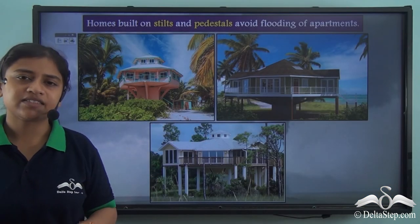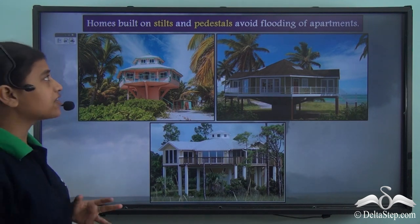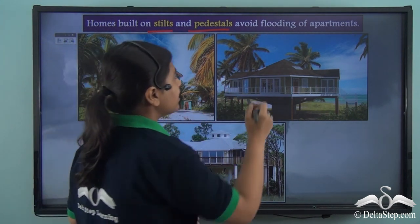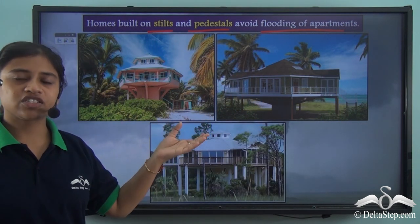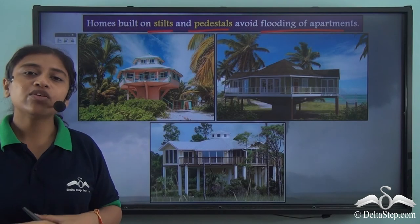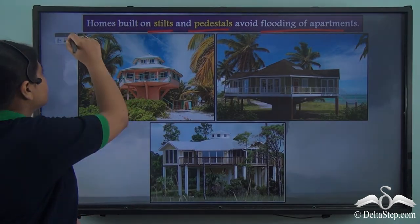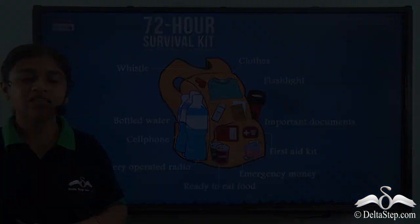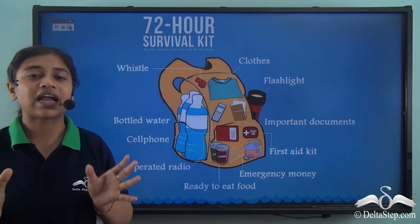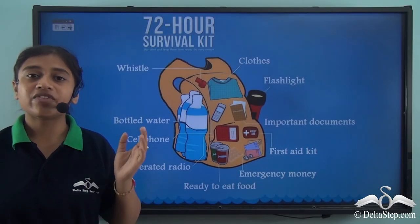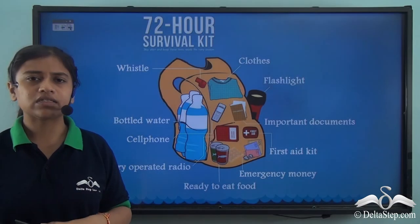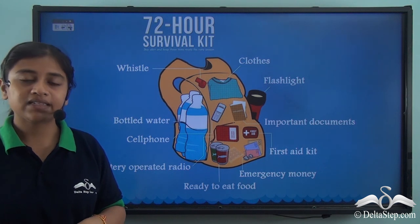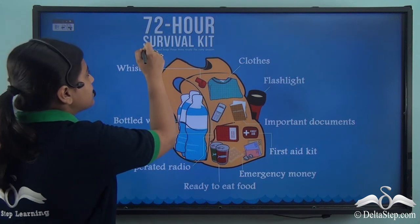In coastal regions, homes are generally built on stilts or pedestals at a certain height to prevent everyday flooding, though such structures cannot help during severe floods. In any form of disaster, certain things must be kept in mind. One of those is the 72-hour survival kit, which helps while waiting for the disaster management team.